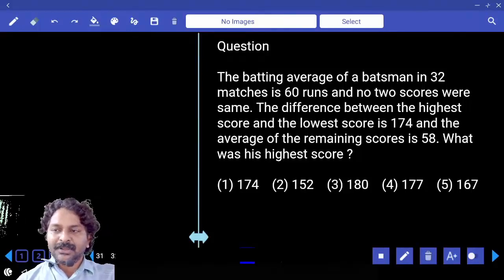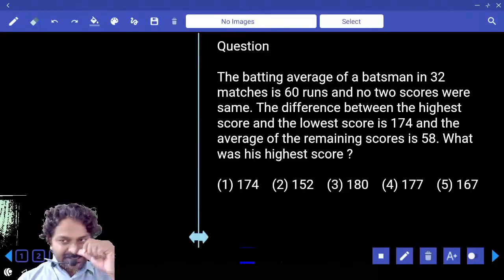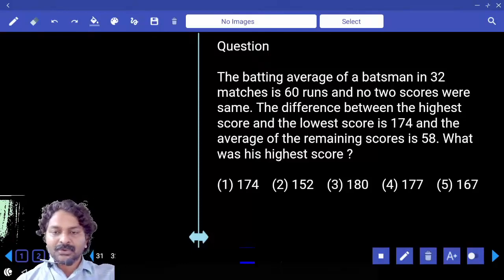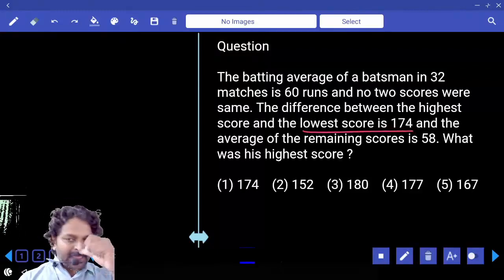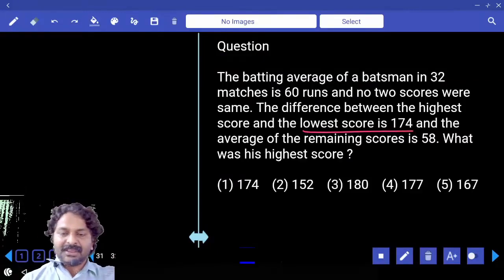The batting average of a batsman in 32 matches is 60 runs and no two scores were the same. The difference between the highest score and lowest score is 174, and the average of the remaining scores is 58. What was the highest score?